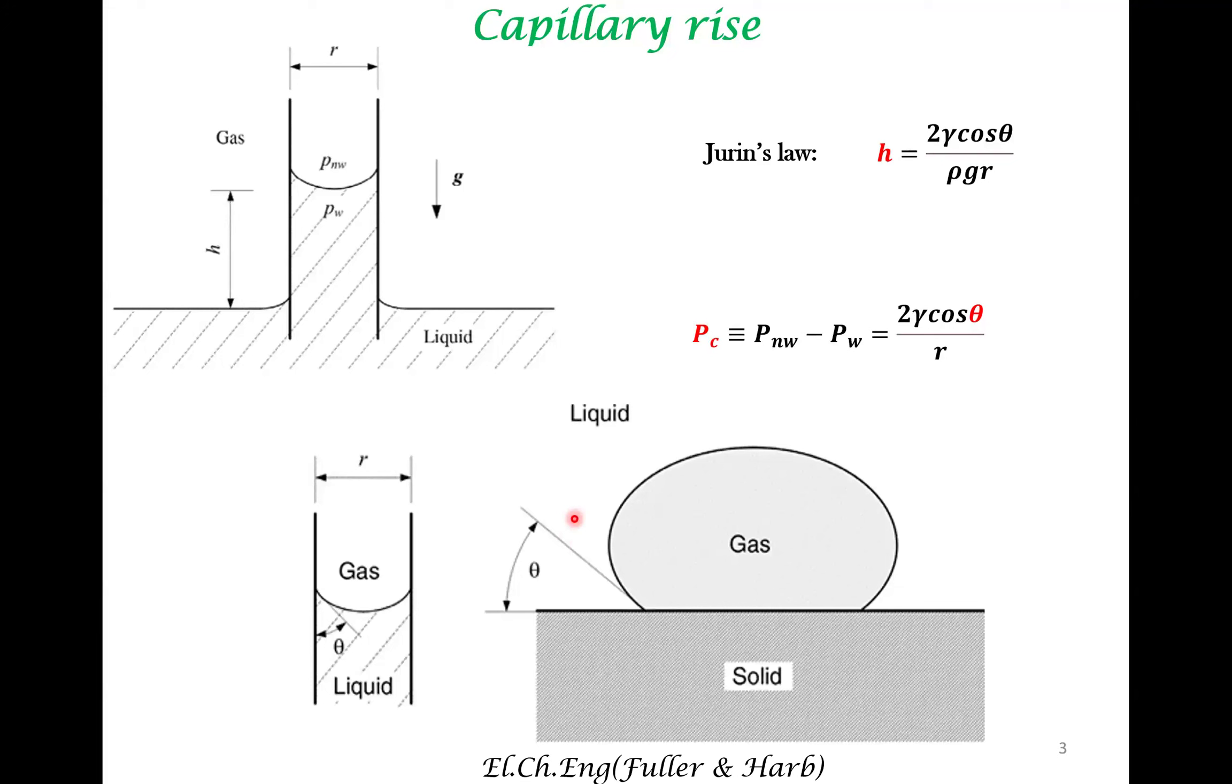We have another formula where we define the capillary pressure. The subscripts W and NW indicate wetting liquid and non-wetting fluid phase. The difference between these pressures is the capillary pressure. If theta is 90 degrees, the pressure difference is zero, which indicates a flat interface.